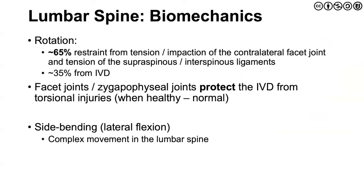Two motions we mentioned briefly are rotation and side bending. Rotation is going to be pretty limited — about 65% of the restraint to rotation comes from just the contralateral facet joint impacting the inferior facet below, as well as winding up the supraspinous and interspinous ligaments. The facets and zygoapophyseal joints actually protect the intervertebral disc from torsional injuries, which have an element of shear to them. Side bending does occur here and is a complex movement. We looked at that idea of coupling and the changes that occur from L1-3 and then L4-5 as it starts to become more sacral in orientation.